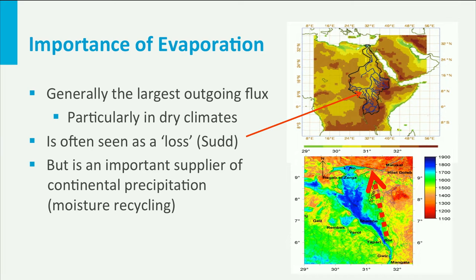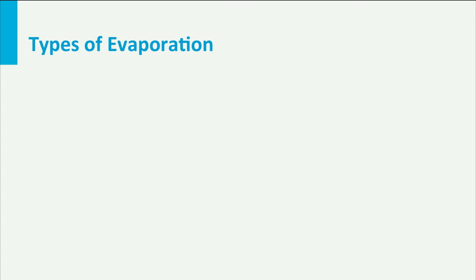But evaporation is not a loss. Evaporation is responsible for all biomass production through transpiration. Moreover, much of the evaporated moisture returns to the earth as recycled moisture. If we don't understand evaporation, then we also can't understand river runoff, because they are closely intertwined.